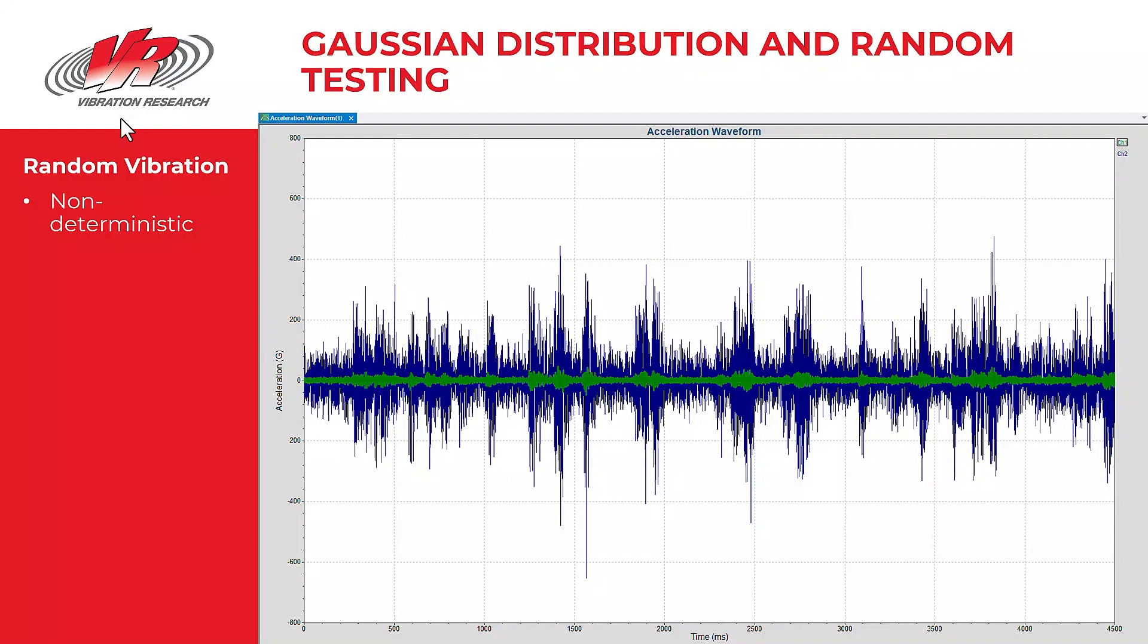That is, it displays different characteristics for every test run. The peak acceleration shown in this graph here are unique to this specific test.